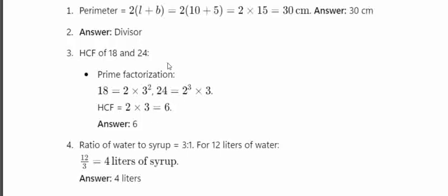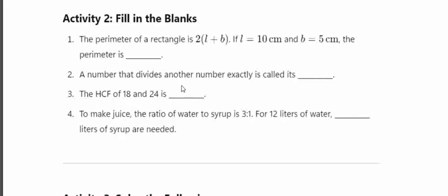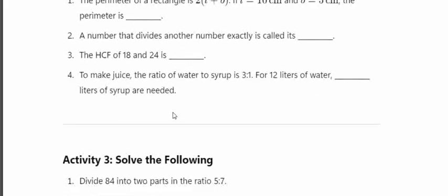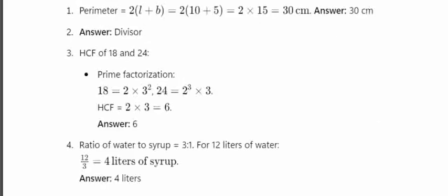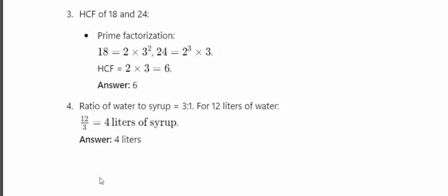To make a juice, the ratio of water to syrup is 3 to 1. If there are 12 liters of water, how much syrup is needed? 3 into 4 gives 12, so syrup is 1 into 4, which equals 4 liters.